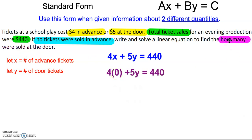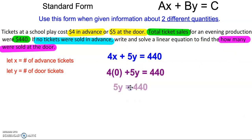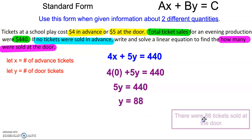And then we can figure out how many were sold at the door because that's our y value. 4 times 0 is 0. Solving for y gives us 88. So there were 88 tickets sold at the door.